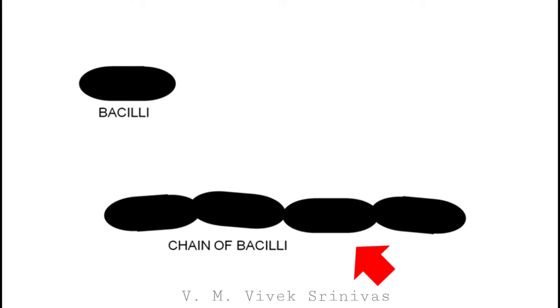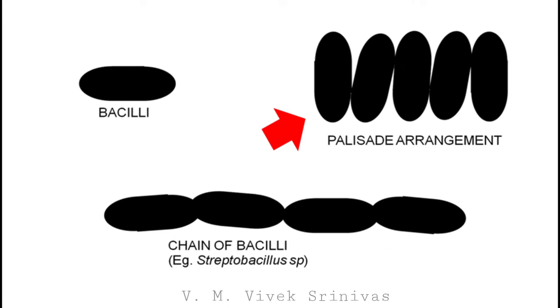The rod shaped bacteria is called bacilli. It can be arranged as a chain of bacilli — example: Streptobacillus species. Bacilli can also have a palisade arrangement — example: Corynebacterium species. These are some arrangements noticed in bacilli.